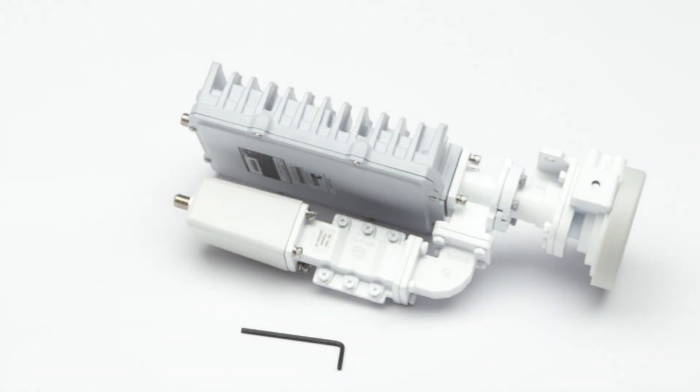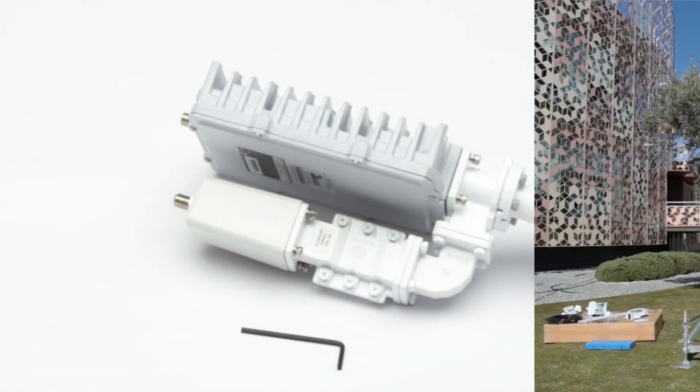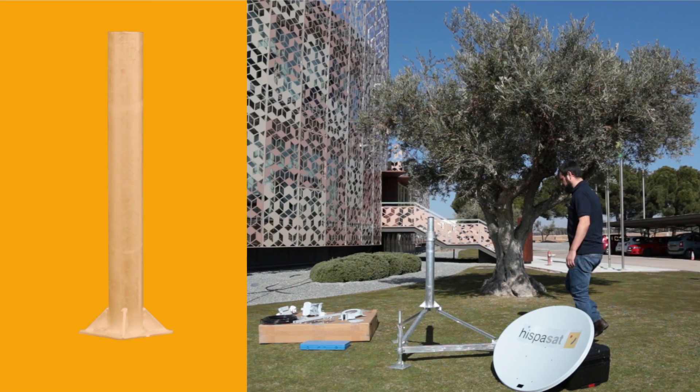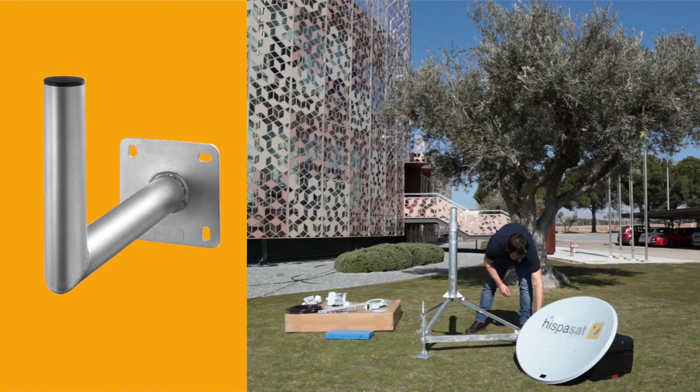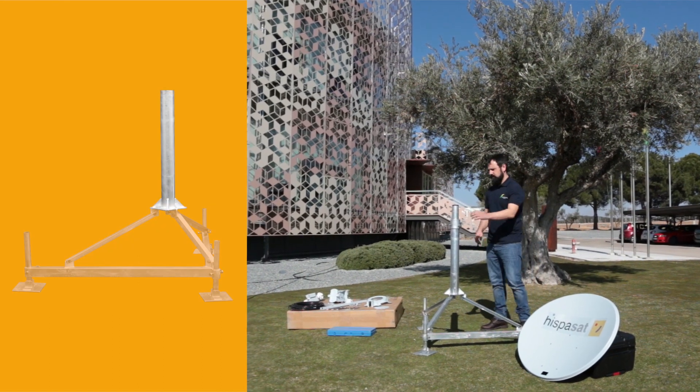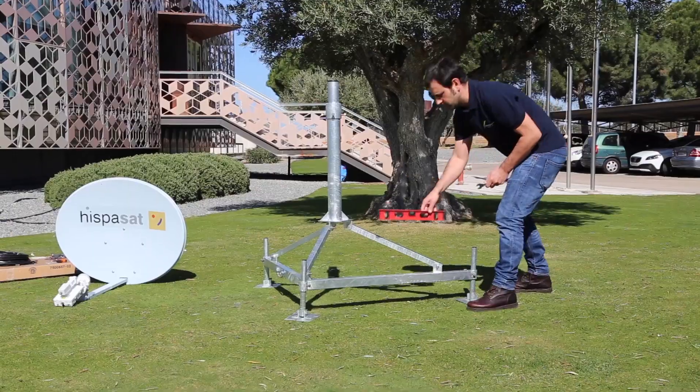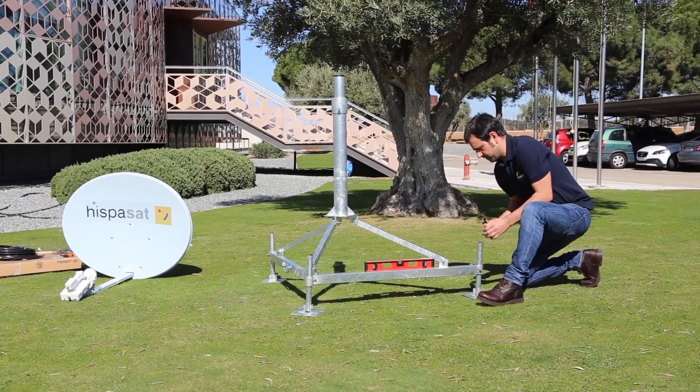You may then assemble and install the antenna. To mount the antenna, a straight support, L-shaped support or a tripod with a tube diameter of 60mm must be used. The support must be well leveled.